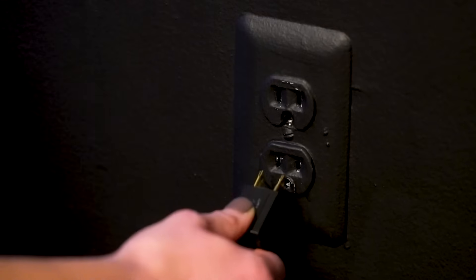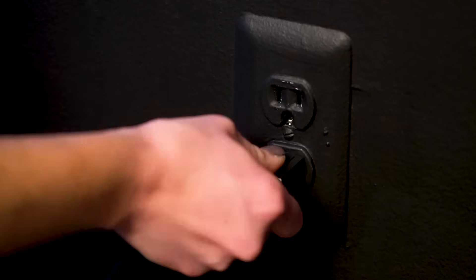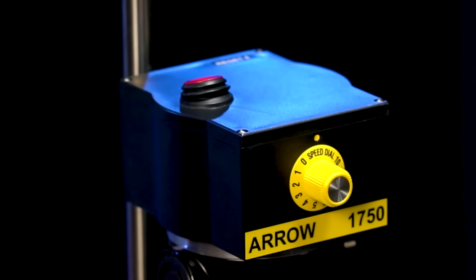Next, plug your stirrer into the outlet. Then, turn the switch into the on position. You should see the switch light come on.